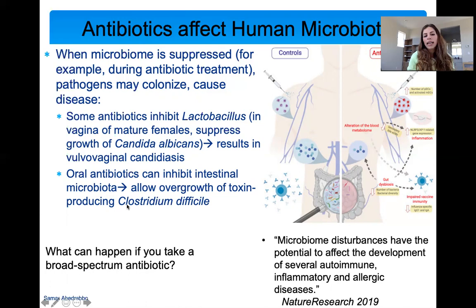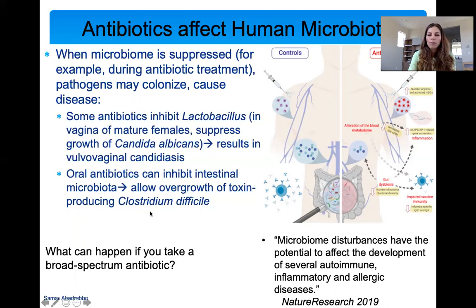This is what can happen if you take a broad-spectrum antibiotic. Remember, broad-spectrum antibiotics target a broad range of bacteria, so not only will they target the pathogen, they'll also target the other good microbes in you. That's why they can really affect the composition of your microbiota and harm you in the long run. A recent study found that people who take antibiotics in the long run potentially develop more severe autoimmune, inflammatory, and allergic diseases because their microbiome is so affected by high amounts of antibiotics.